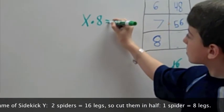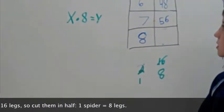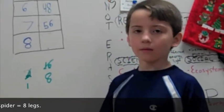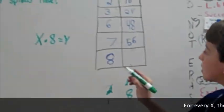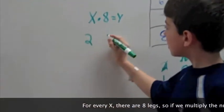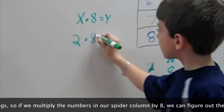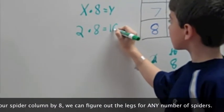X times 8 equals Y. So, first, I'll double check the problem. Two times eight equals sixteen.